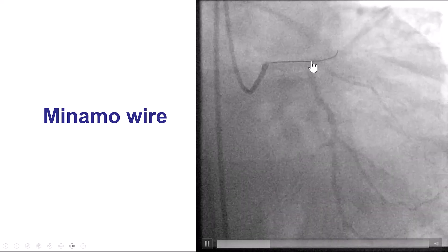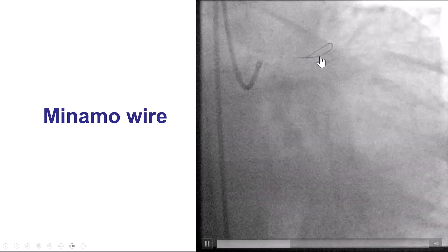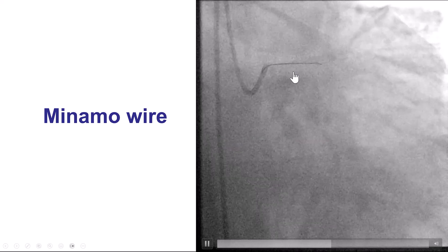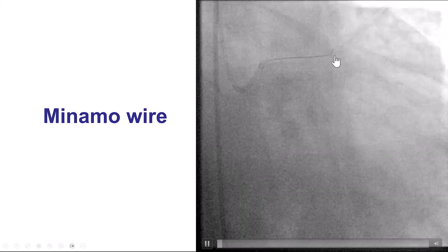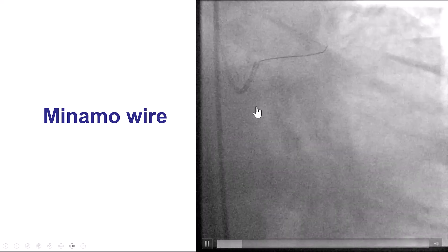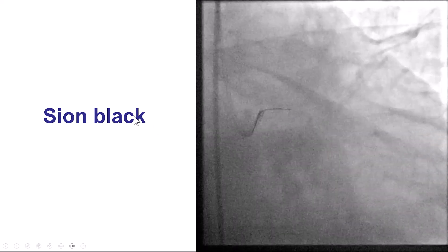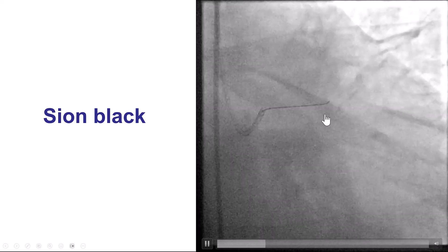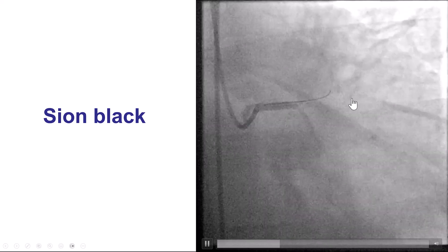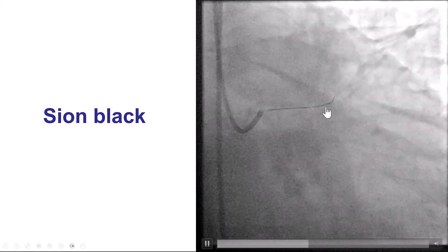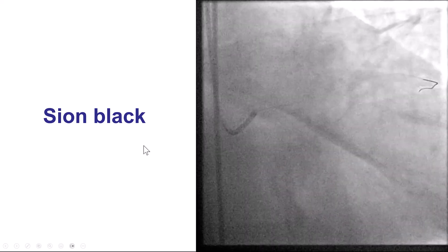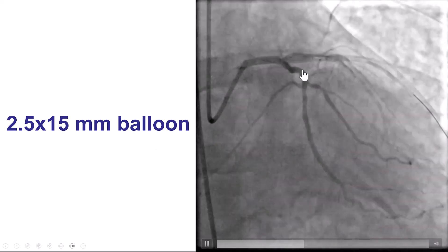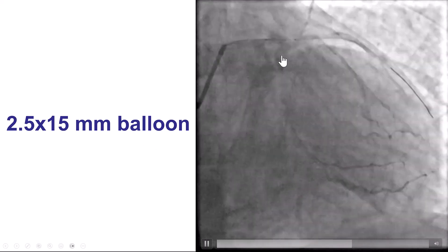We decided to start with the occluded LAD. We used the workhorse guidewire, but the wire could not cross through the occlusion — it kept on knuckling. So we switched to a polymer jacket wire, a Confianza Pro Black, and that wire with gentle manipulation successfully advanced through the occlusion, restoring some antegrade flow after ballooning with a small balloon.